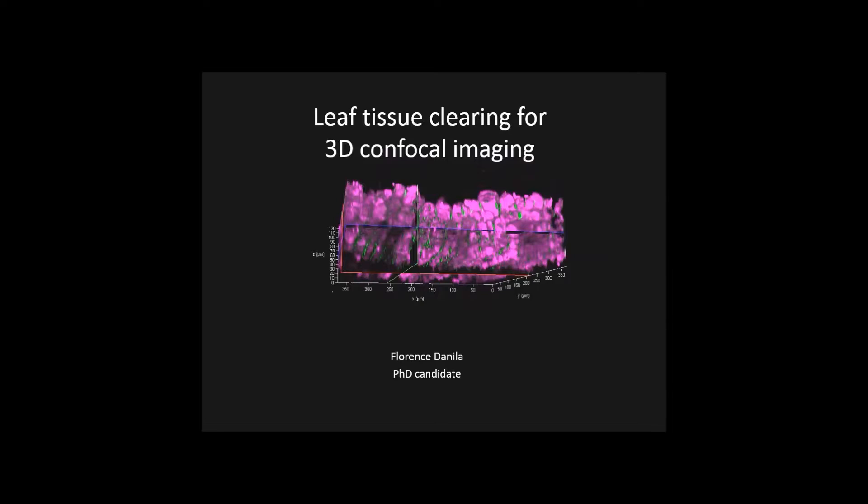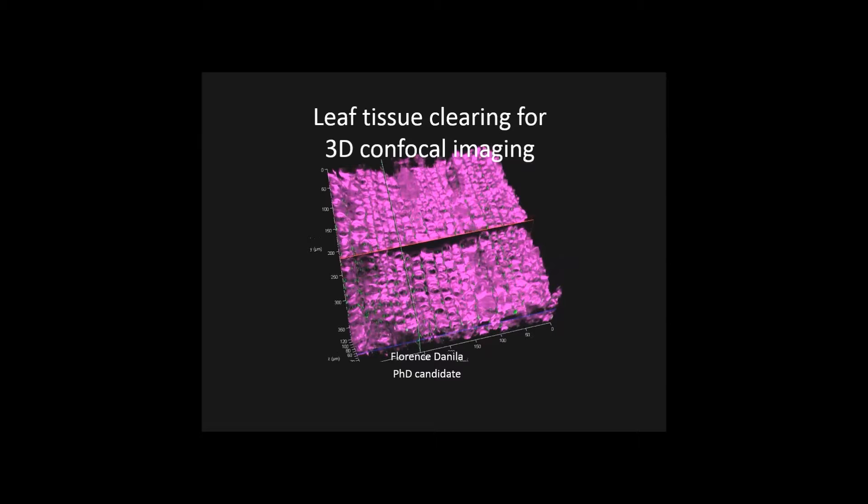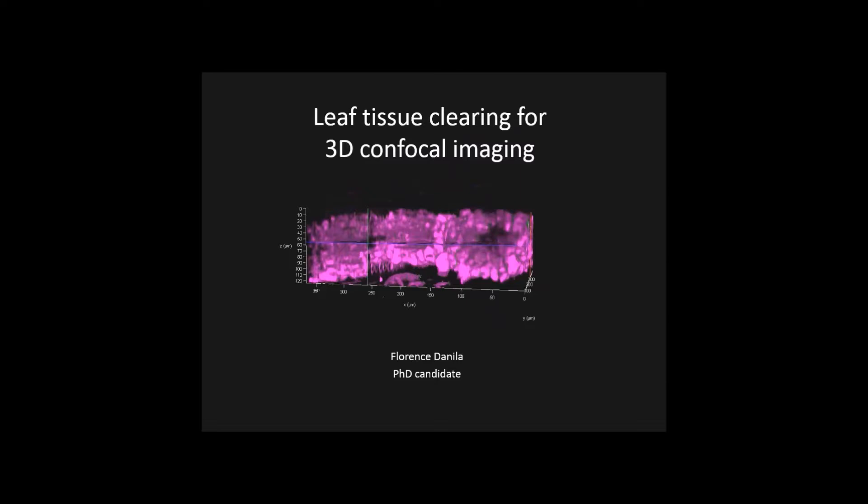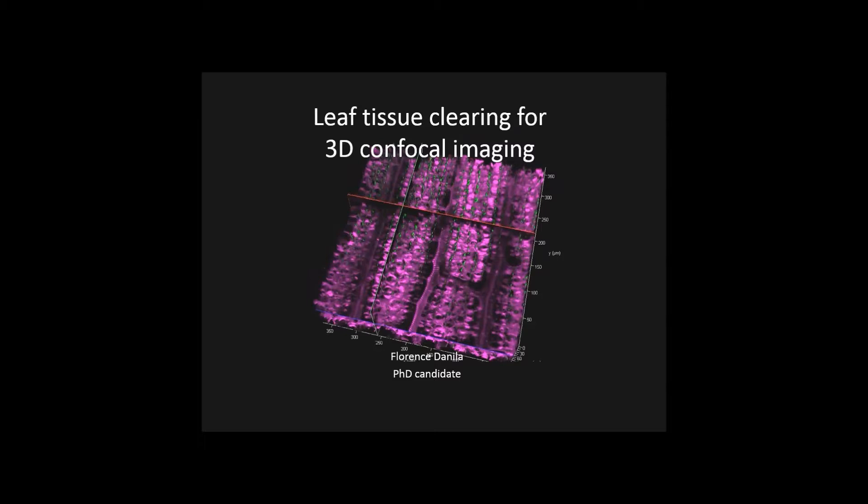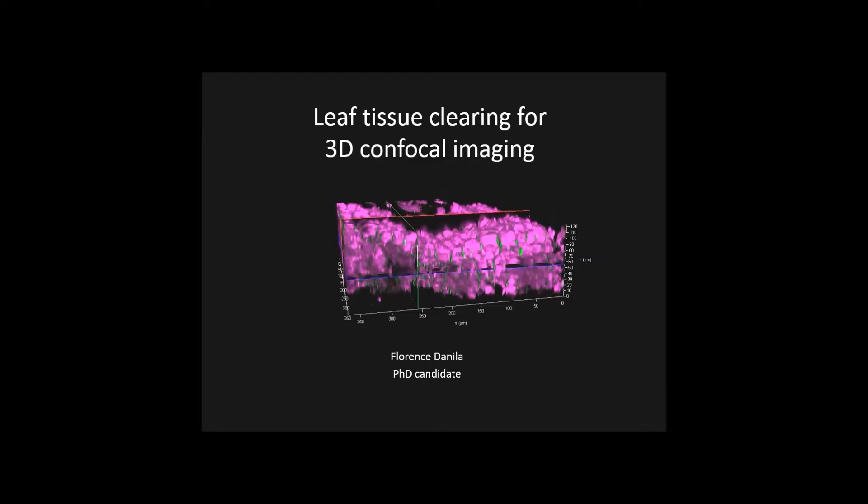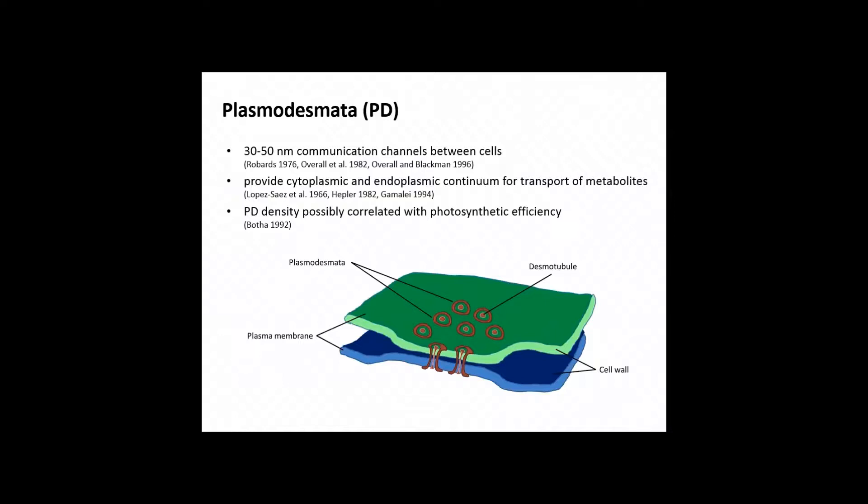Good afternoon everyone. Today I'll be talking about a part of my work, which is plasmodesmata quantification. Plasmodesmata quantification is basically a combination of two methodologies: fluorescence microscopy, which is partly 3D confocal imaging, and in tandem with SEM. Since I have only 10 minutes, I chose the leaf tissue clearing for 3D confocal imaging to discuss today. In this title page, you can see a video of a reconstructed 3D image generated from a cleared leaf tissue hybridized with a particular antibody.